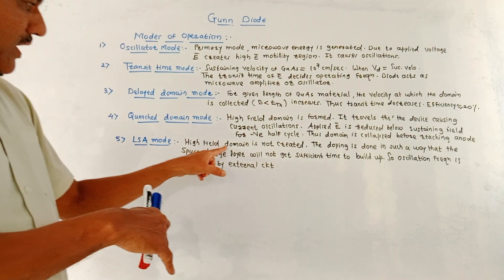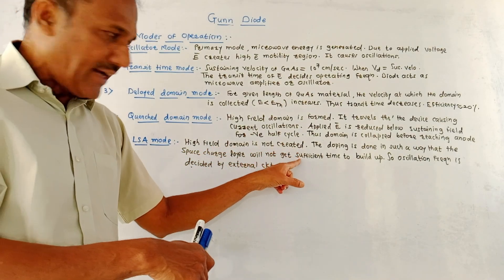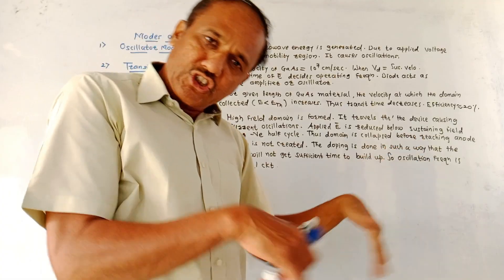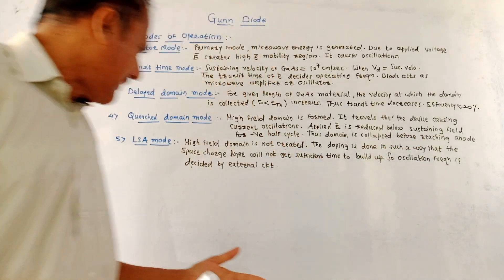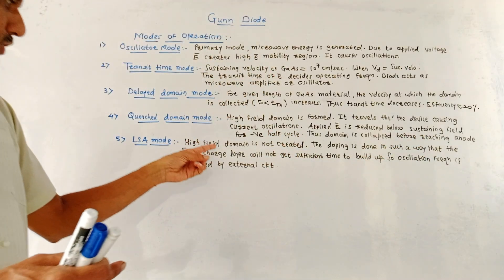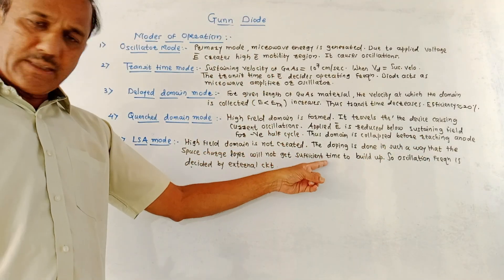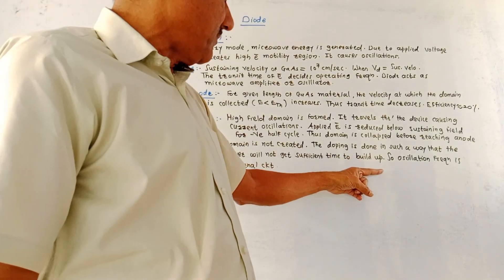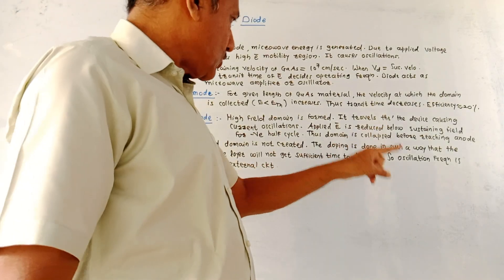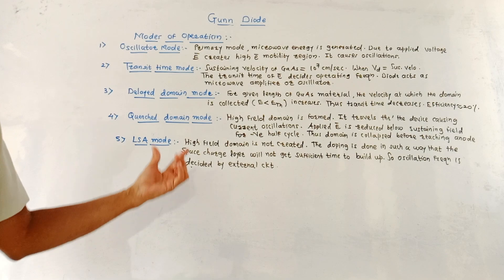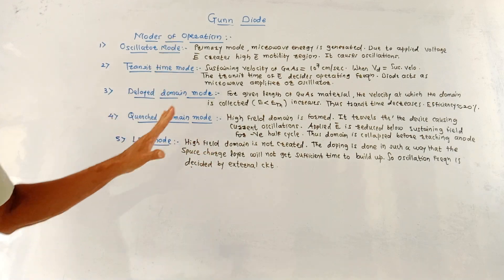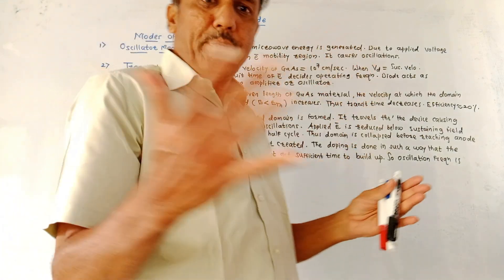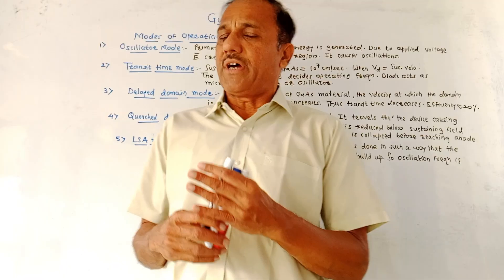The last mode is the LSA mode. In this mode, no high-field domain is created. The doping is done in such a way that the space charge layer does not get sufficient time to build up oscillations. The oscillating frequency is decided by the external circuit. This covers the different operating modes of the gun diode.